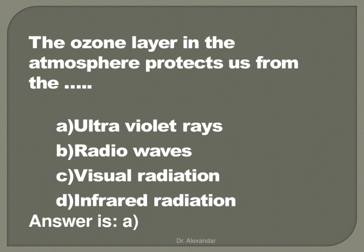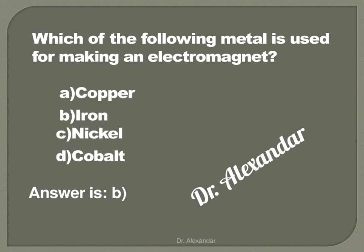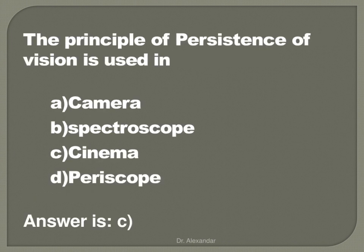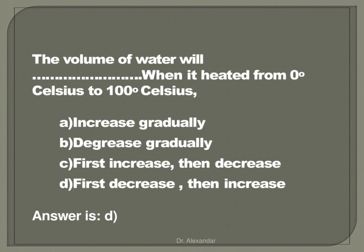The ozone layer in the atmosphere protects us from ultraviolet rays. Which of the following is used for making an electromagnet? That is iron. The principle of persistence of vision is used in cinema. In which of the following is alternating current not used? That is electroplating. The volume of water will first decrease then increase when it is heated from 0 to 100 degrees Celsius.